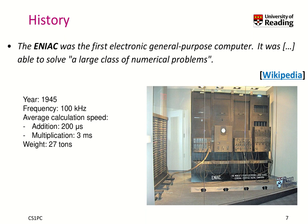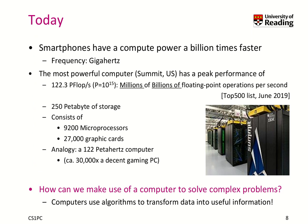When you look at today, you have a smartphone that has compute power a billion times faster, because we're now talking about gigahertz with multiple cores. It's really so much faster than before — unimaginable from the past. One of the most powerful supercomputers in the world is Summit in the US. It has a peak performance of 120 petaflops per second, meaning millions of billions of floating-point operations per second. It also comes with 250 petabytes of storage. You can think of it as roughly 30,000 times the performance of a decent gaming PC.